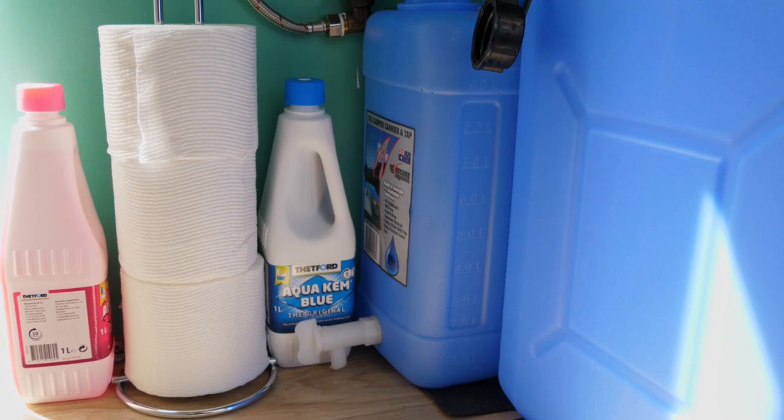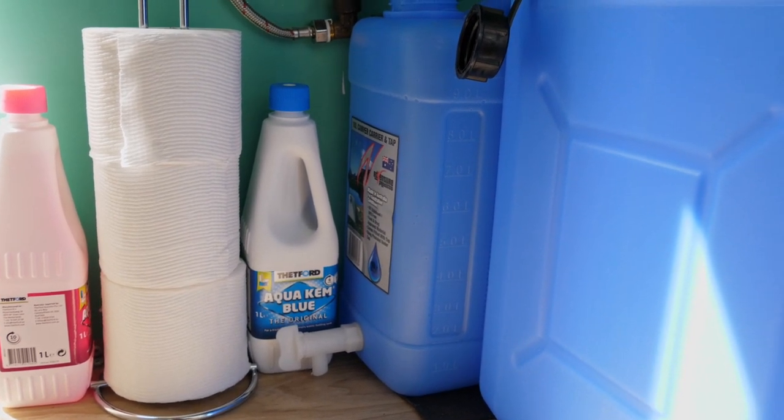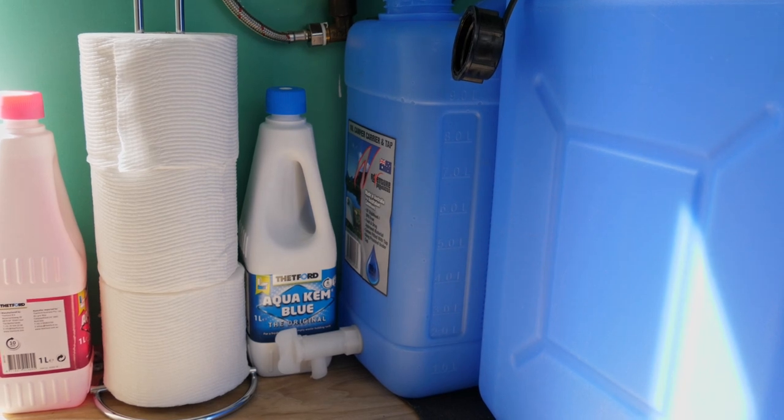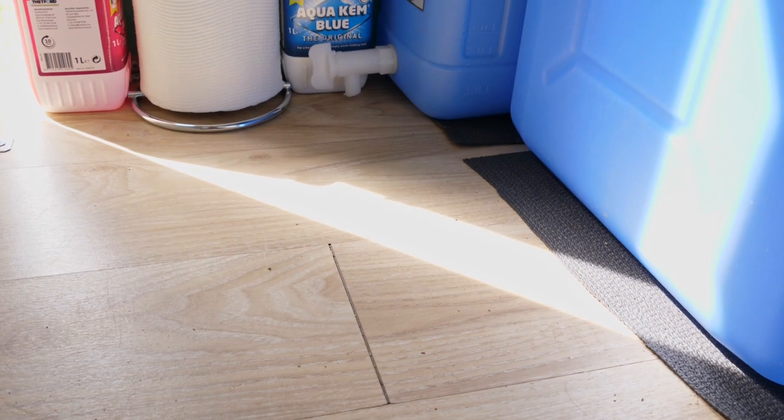And then I'm also storing in here the blue chemical which goes in my black water tank in my toilet and then the pink chemical which goes in the upper cassette, and some spare toilet paper of course. And then this part here is where the toilet normally sits.